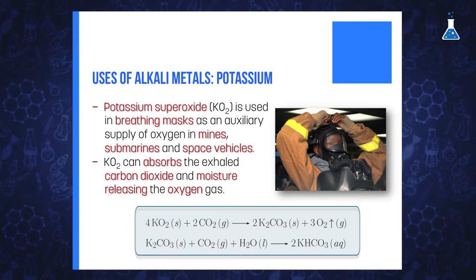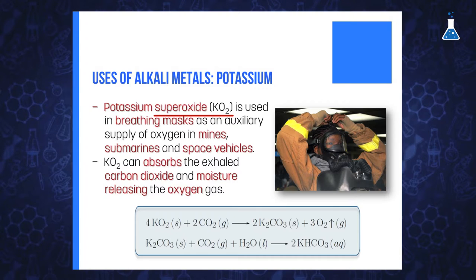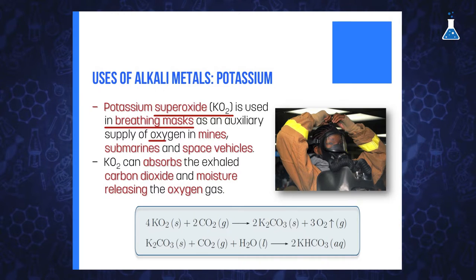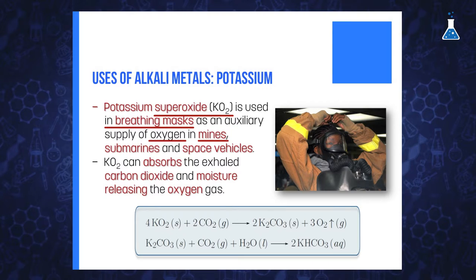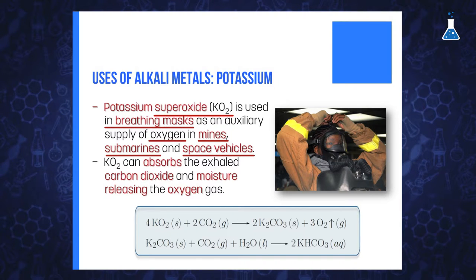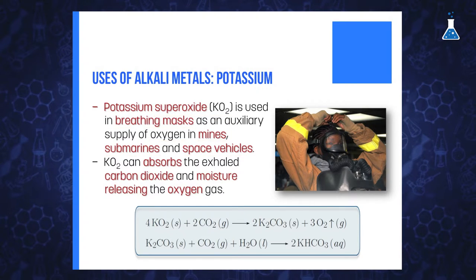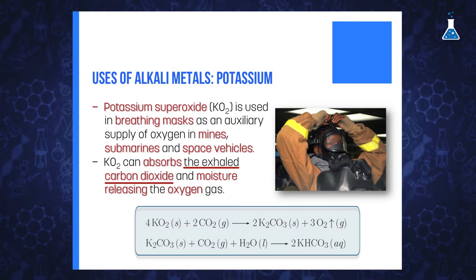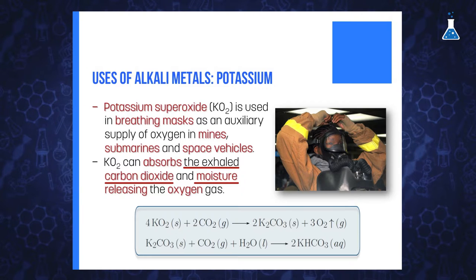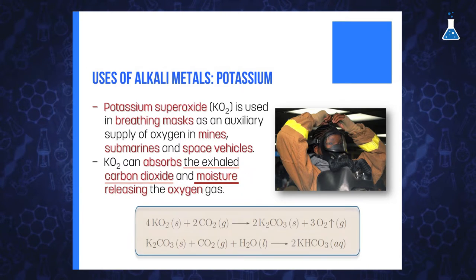Potassium is used to make superoxide, KO₂, which is used in breathing masks as an auxiliary supply of oxygen in mines, submarines, and space vehicles. Potassium superoxide can absorb exhaled carbon dioxide and moisture, releasing oxygen gas according to the following reaction.